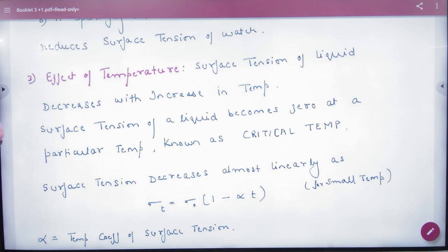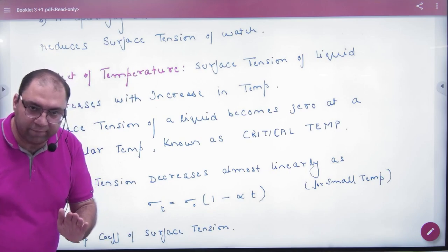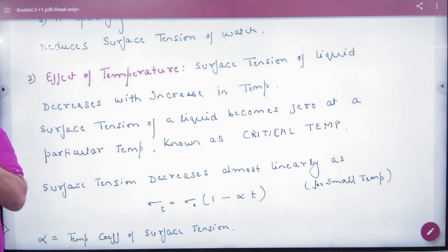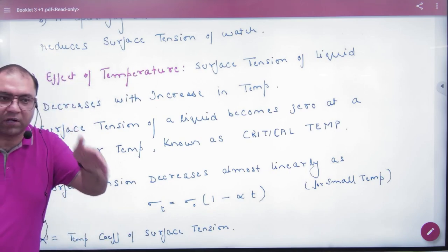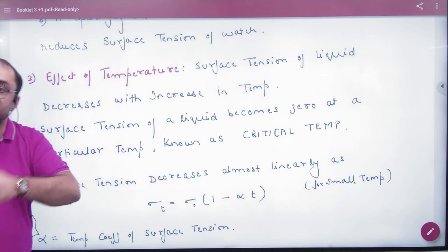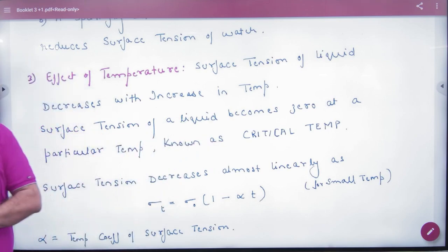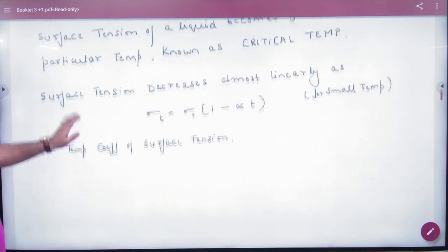Effect of temperature: Surface tension of water decreases with increase in temperature. As you increase temperature, surface tension is reduced. When you increase temperature, the surface tension becomes completely zero at a particular temperature known as critical temperature.